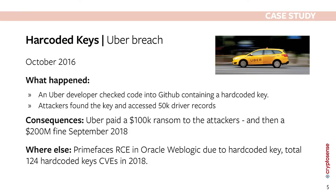Our first case study involves Uber. In October 2016, a developer checked code into a publicly available GitHub repository that accessed Uber's production systems — already a policy breach. It wouldn't have been a problem if not for a hard-coded credential embedded in the code: a cryptographic credential used in an HMAC challenge-response protocol to get access to Uber's data. Attackers found this code on GitHub.